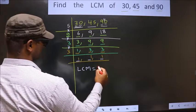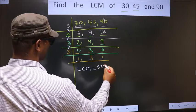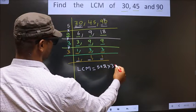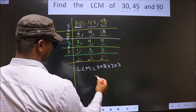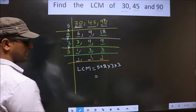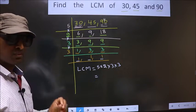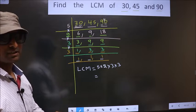That is 5 into 2 into 3 into 3. You multiply all these numbers. Whatever number you get, that is your LCM.